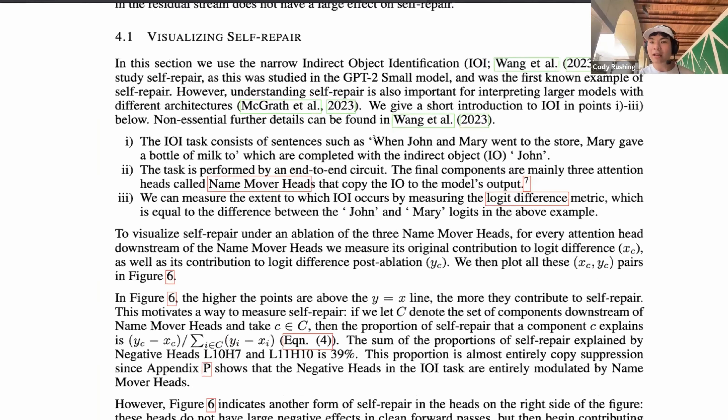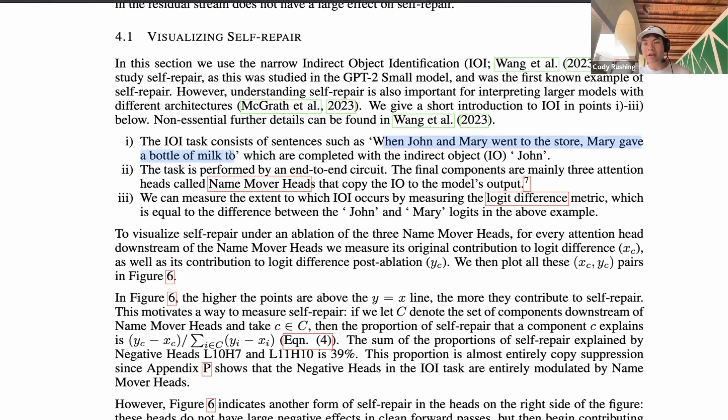saying that, hey, we still have a ton of questions that we don't quite understand yet, but we've made some progress. So, yeah, should we just talk a bit about why we think this exists in the first place? Yeah, and maybe briefly recap what self-repair even means in the IOI context? In the IOI task, again, we have these, like, sentences where we have two names, and, like, the model is able to, like, predict one of them. For instance, one such example is when John and Mary went to the store, Mary gave a bottle of milk to,